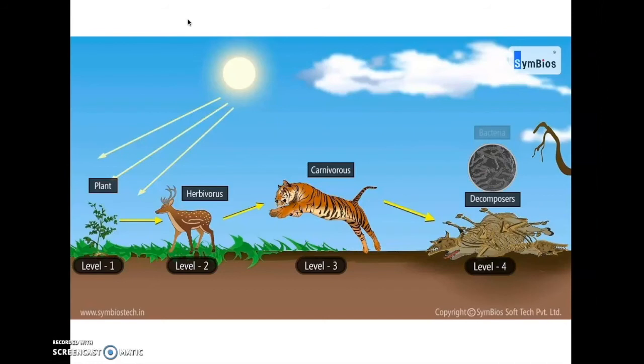But it doesn't end there. Energy then gets transferred to decomposers, like bacteria, that break down dead and decaying materials and return it back into the Earth so that the whole cycle of life can begin again. But as a reminder, the initial source of energy is the sun, and this is what we call a food chain.